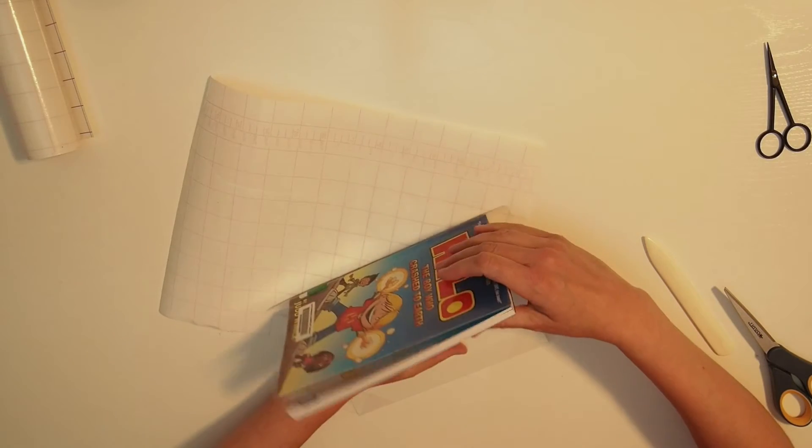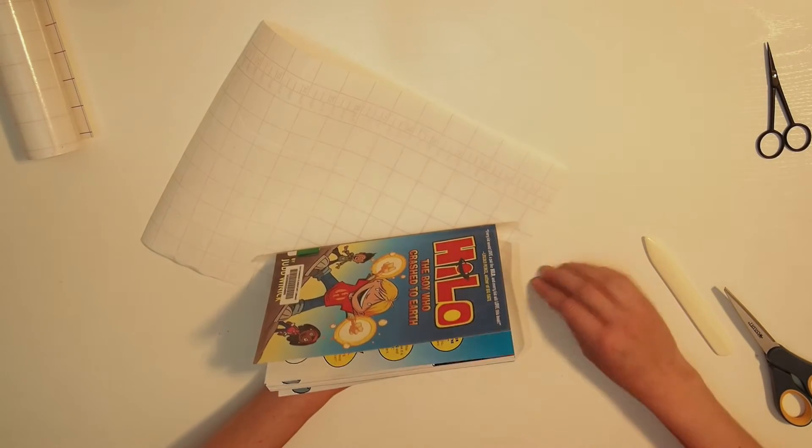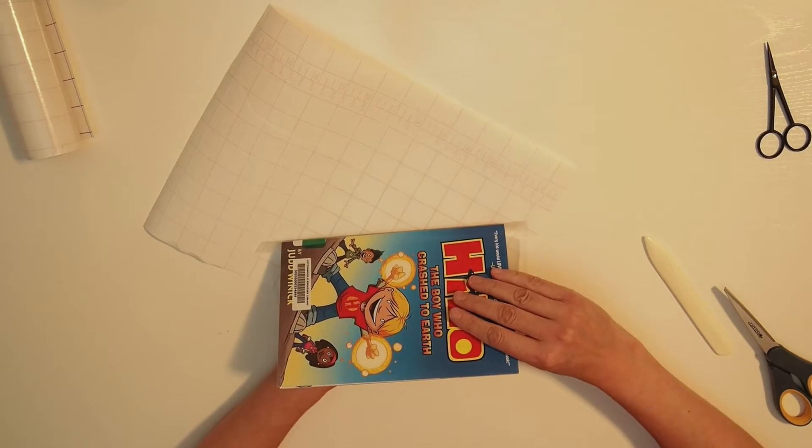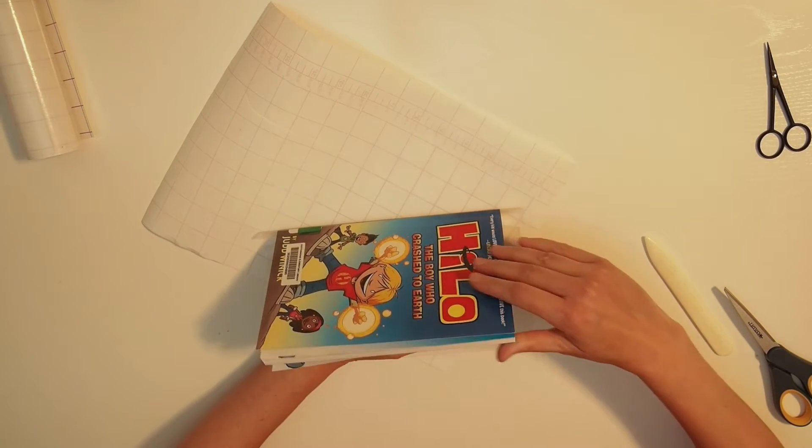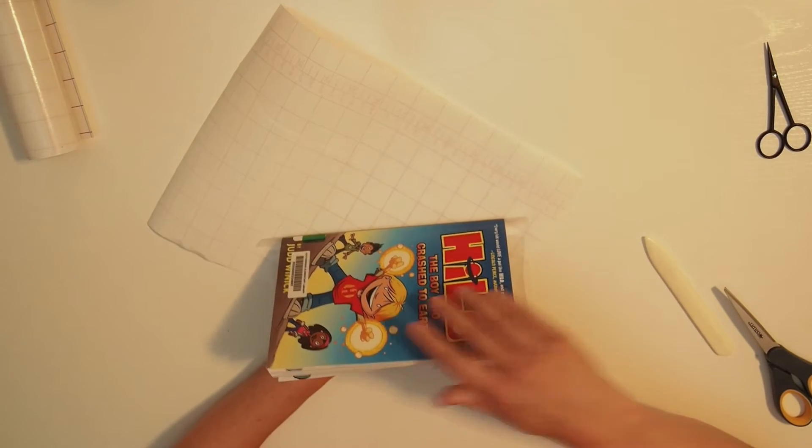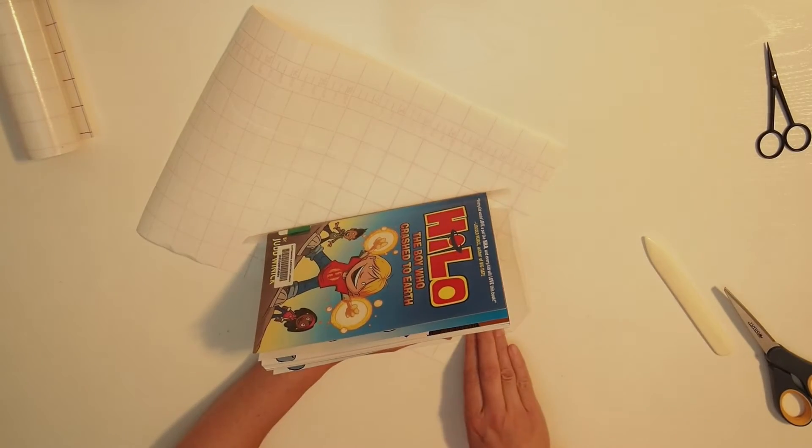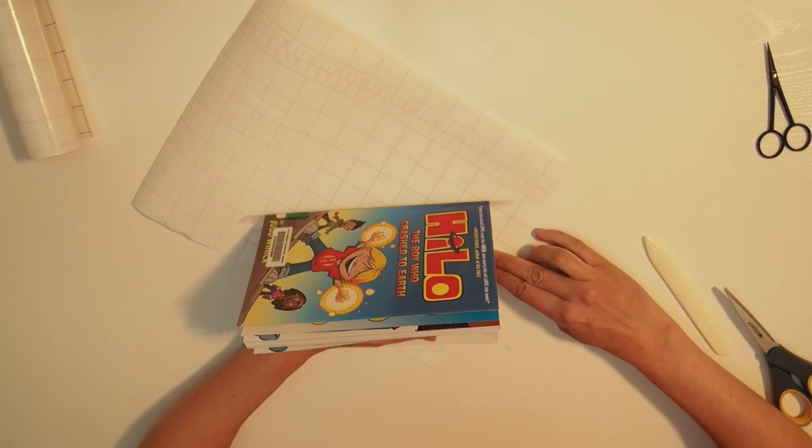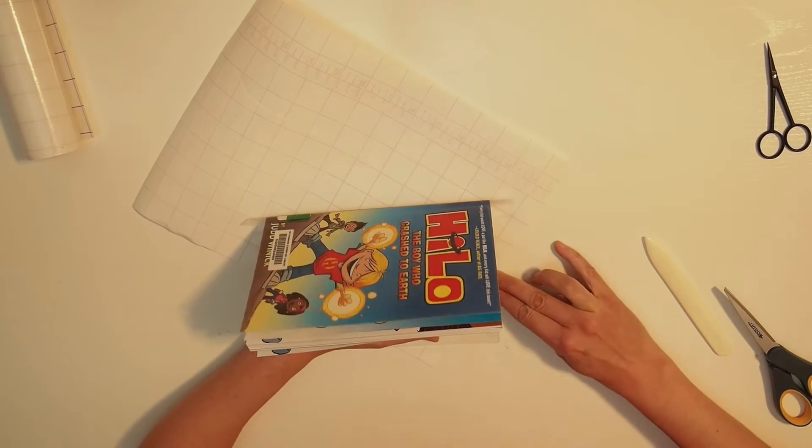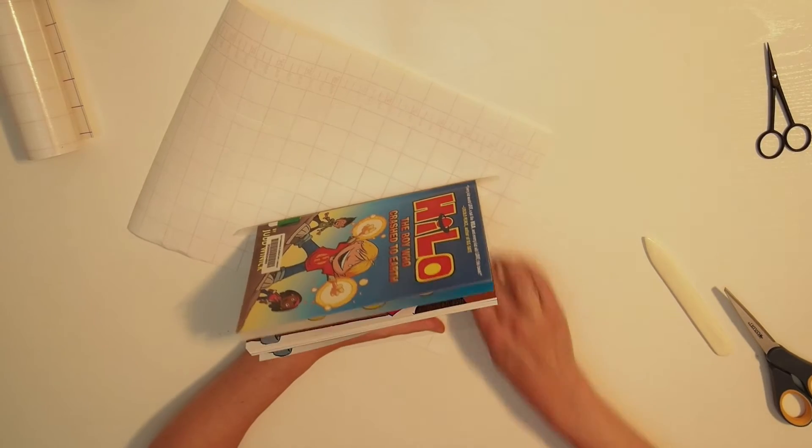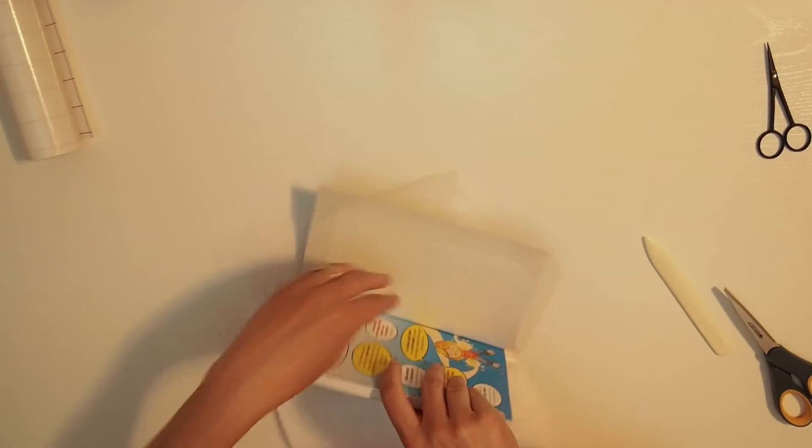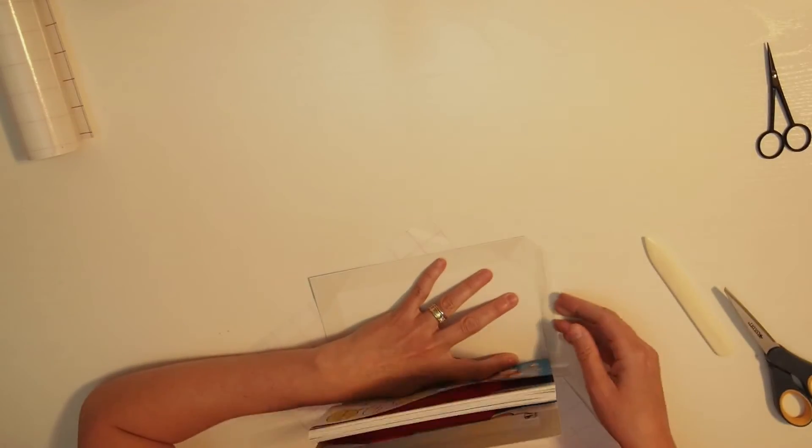I normally would have the book up like this if I was doing this, but it blocks the camera view, so just since you saw the process once already, I'm going to do it the way I would normally do it. I'm going to let the book rest against my hand because it allows the back cover to lay flat on the table, giving me an easier surface to work with. You can see a little bit better from this side.